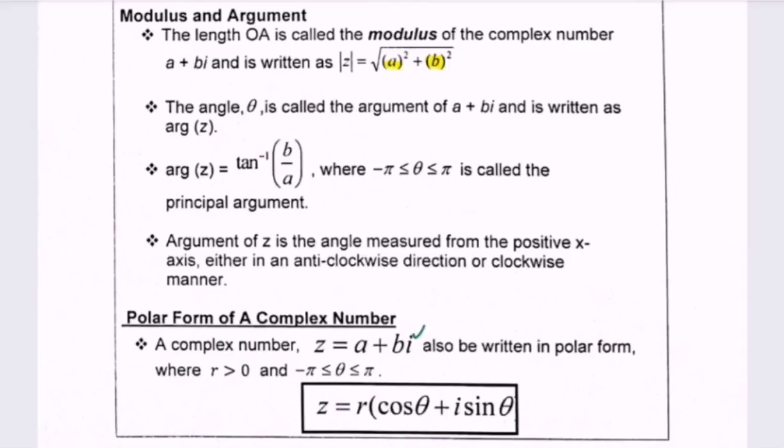If it's in polar form, z equals r, where we have the modulus of z, multiply with cos theta, where theta is the argument of z, plus i sine theta.